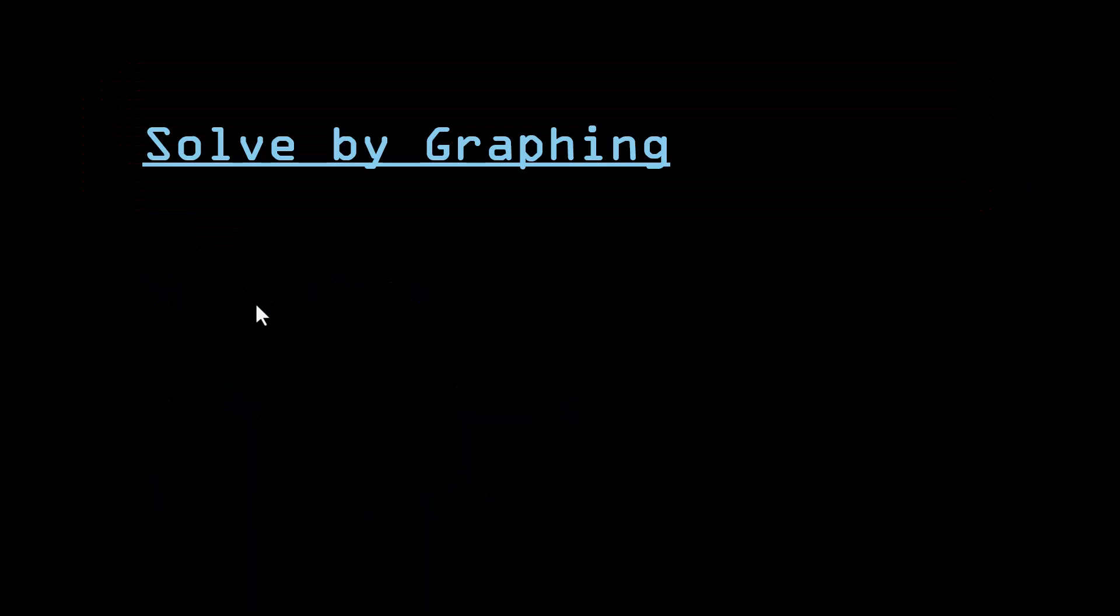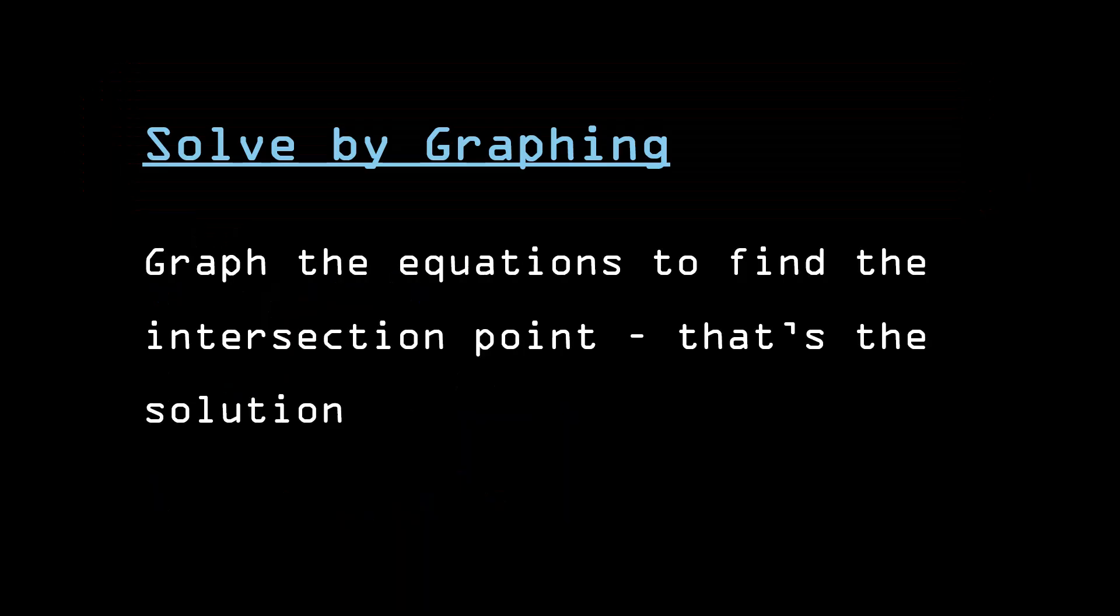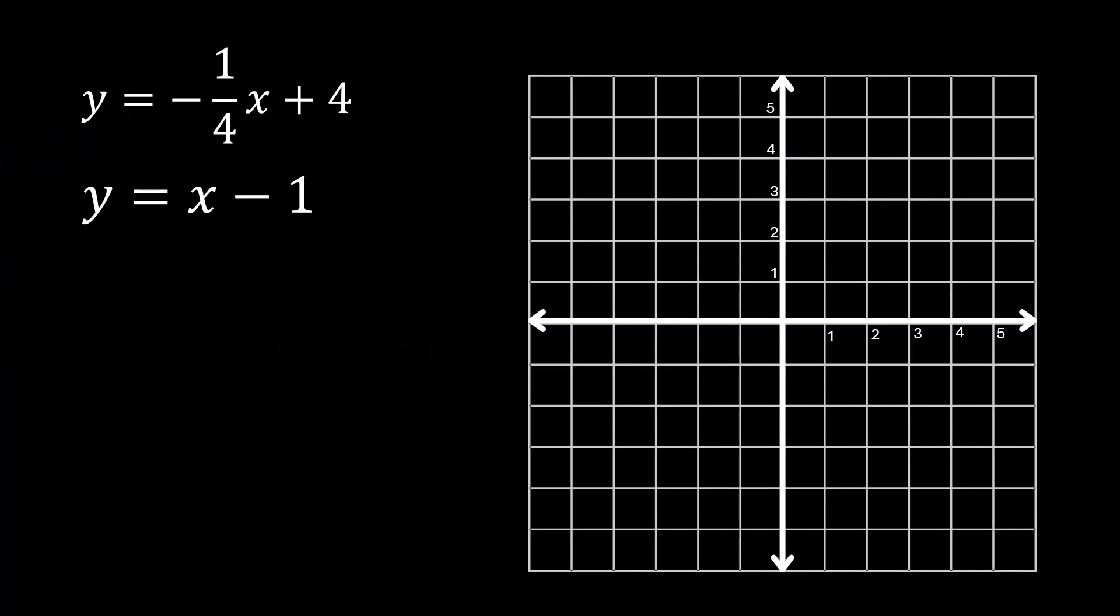Let's look at graphing first. I'm going to graph these two lines on the same graph, and wherever they cross, that's your answer. Starting with this one, y equals negative one-fourth x plus four. The plus four is the y-intercept, so you start by putting a dot there. You use the slope, which is negative one-fourths, to find another point. We're going to go down one over four. The second point is here. Graph the line.